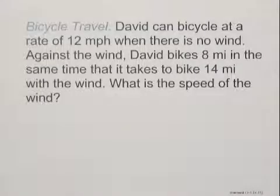David can bicycle at a rate of 12 miles per hour when there is no wind. Against the wind, David bikes 8 miles in the same time that it takes to bike 14 miles with the wind. What is the speed of the wind?